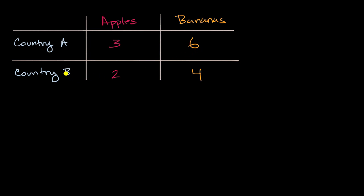Similarly, country B, if they put all of their energy behind apples in a day, they could produce two apples. And if they put all of their energy behind bananas in a day, they could produce four bananas. So given this, who has the comparative advantage in apples? And who has a comparative advantage in bananas? And how should they trade?